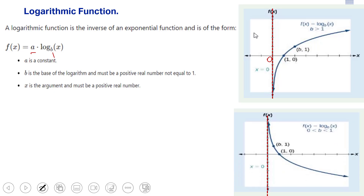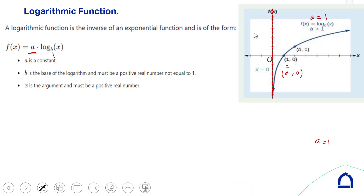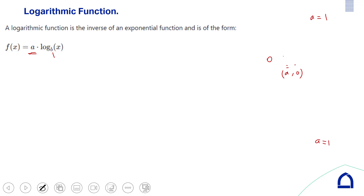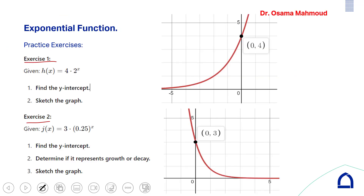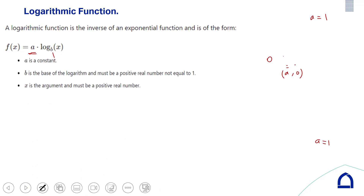Similar to the exponential function, with a = 1 the x-intercept is at (1, 0), which is (a, 0). Comparing logarithm and exponential: the exponential function has a y-intercept, but the logarithm function has an x-intercept.